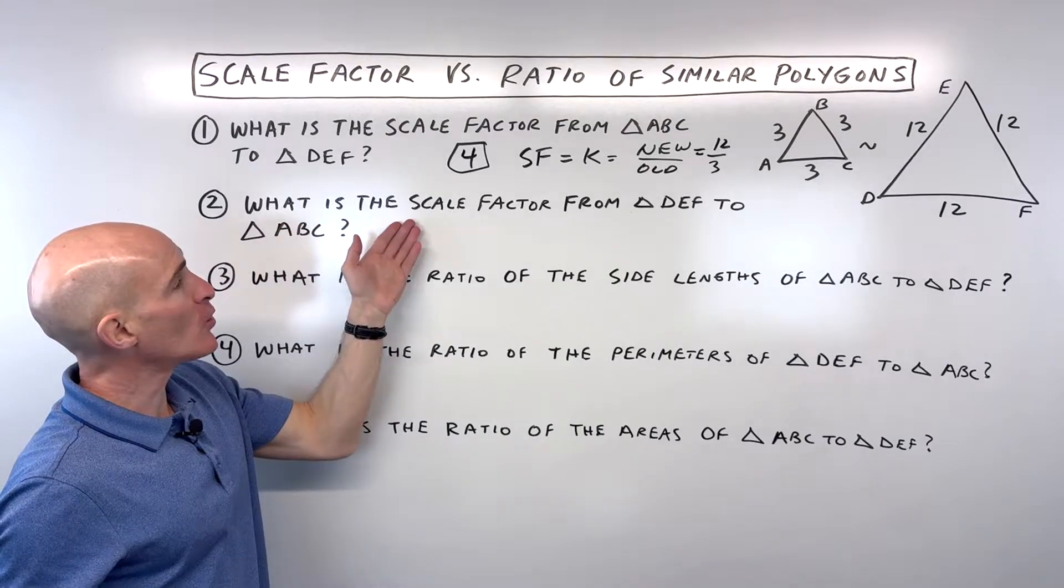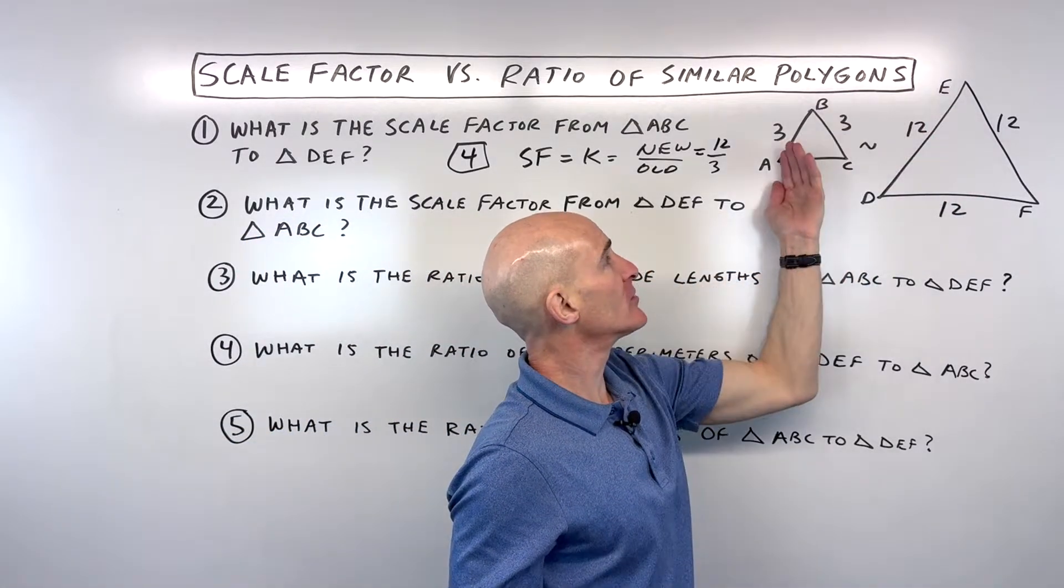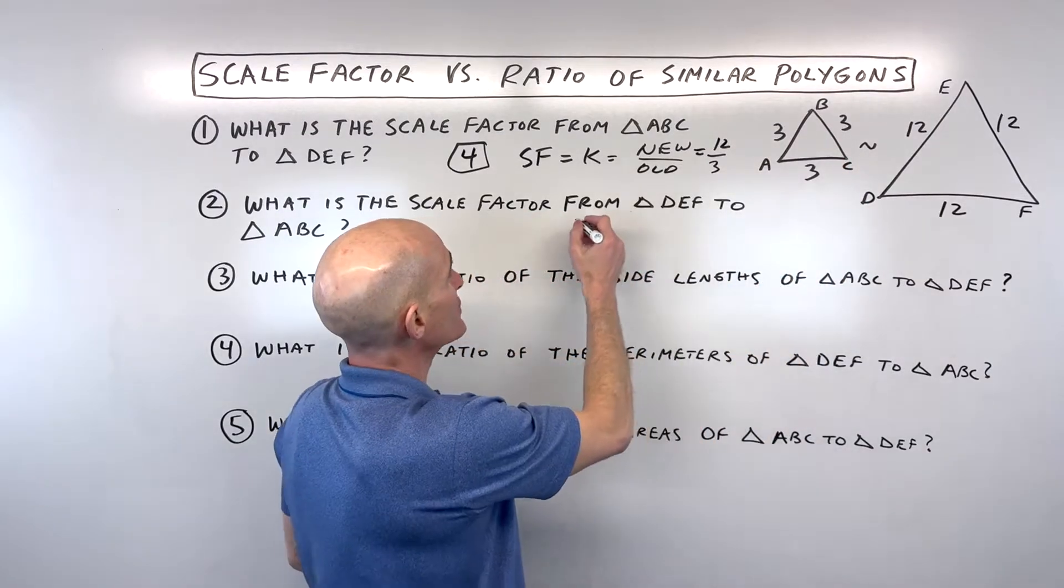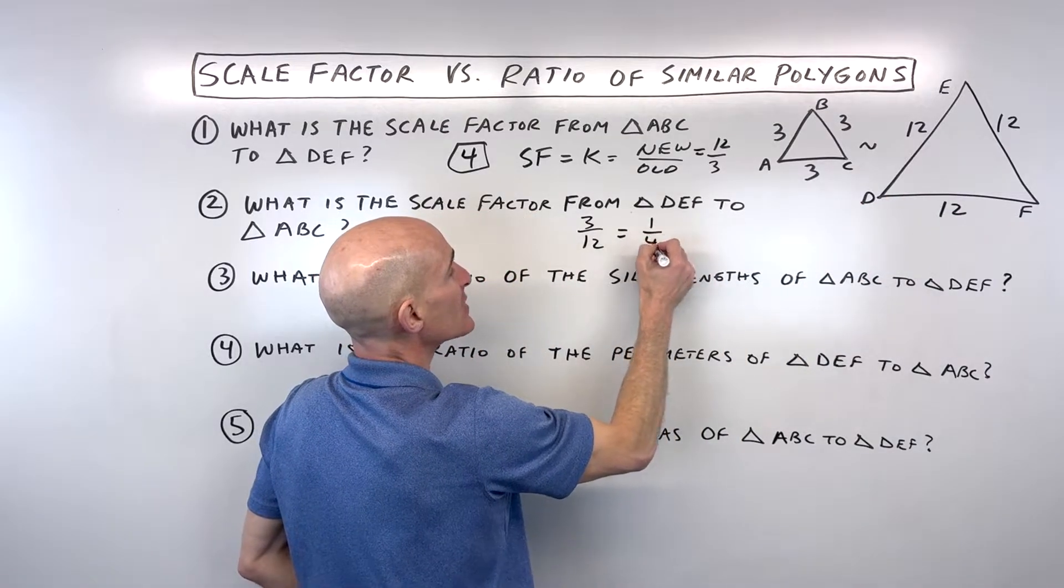Now, for number 2, if it says, what is the scale factor from triangle DEF, this bigger triangle, to the smaller triangle, then this would be the new one, this would be 3, and then 12 would be the old one, and you can see that that's 1 fourth.